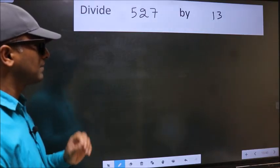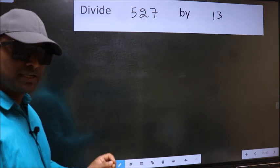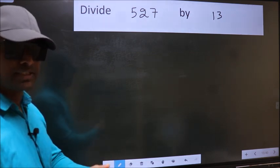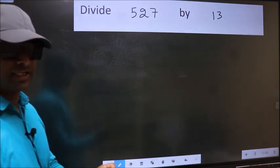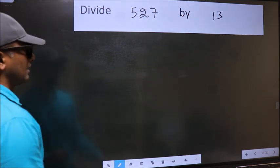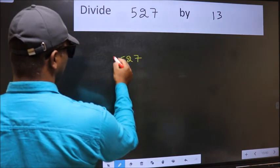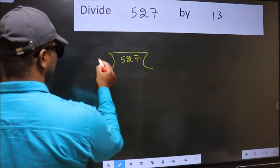Divide 527 by 13. While doing this division, many do this mistake. What is the mistake that they do? I will let you know, but before that we should frame it in this way: 527 and 13 here.